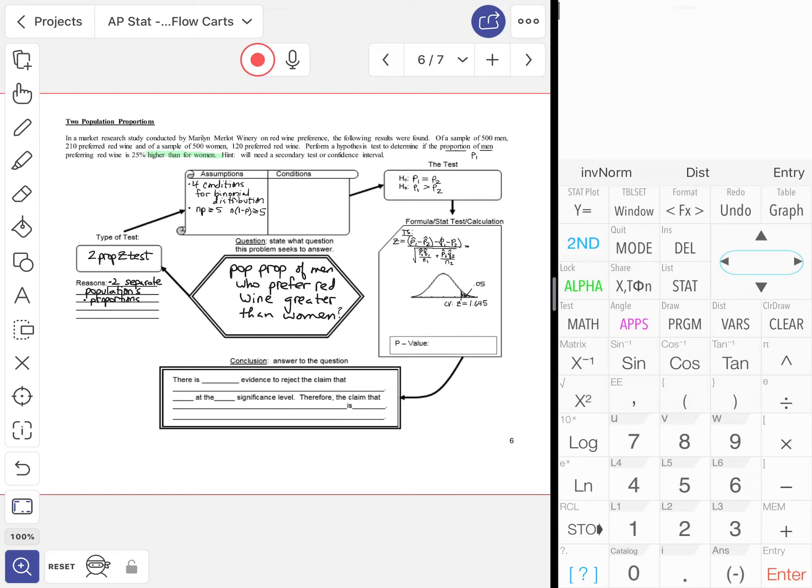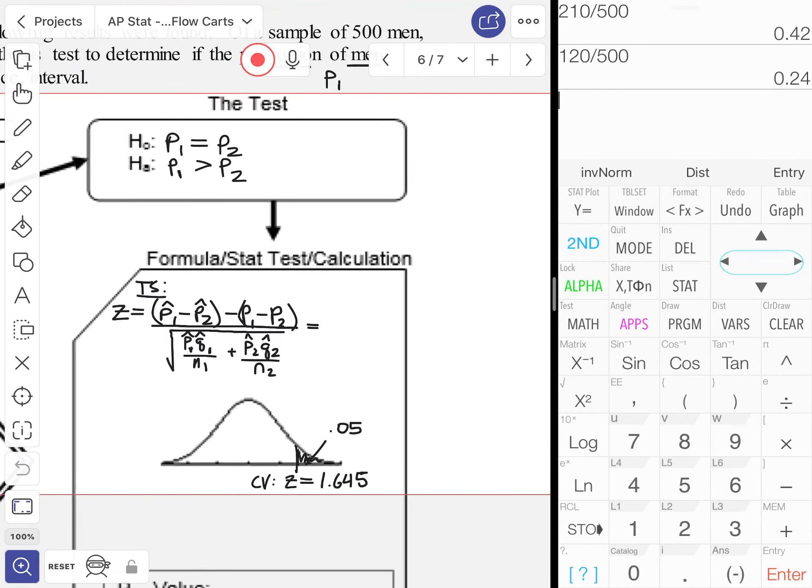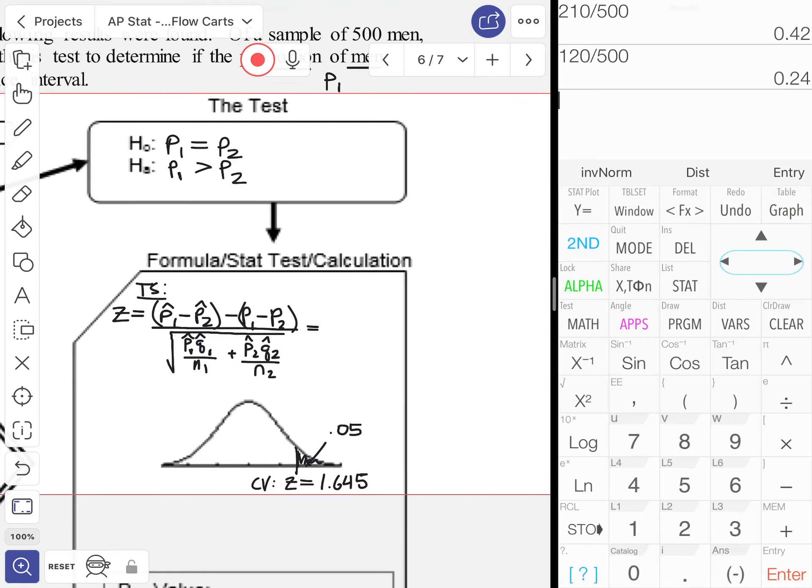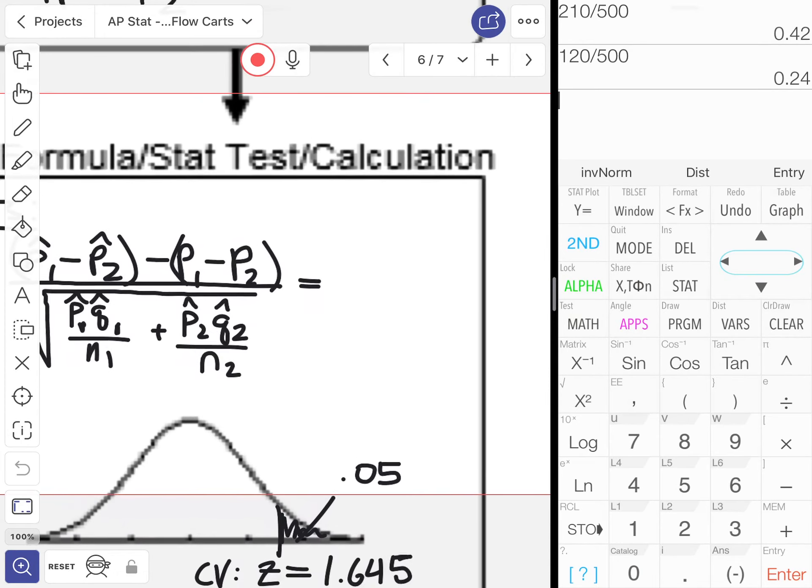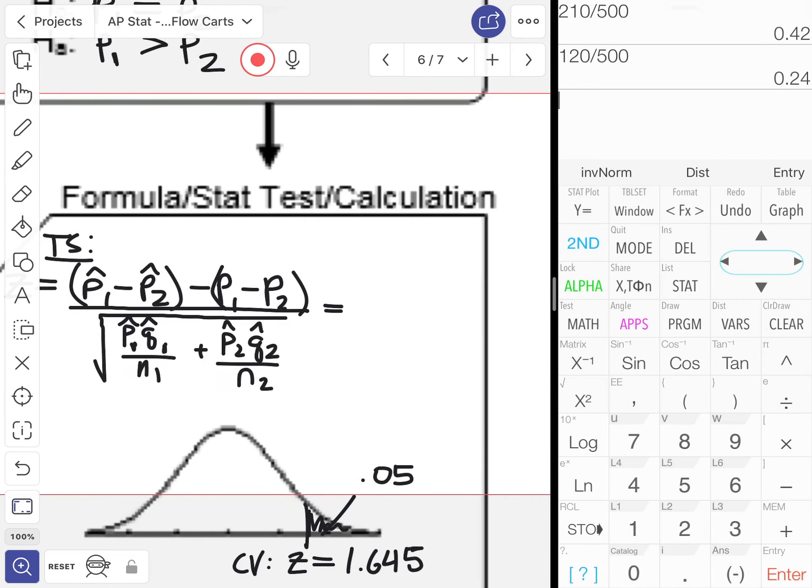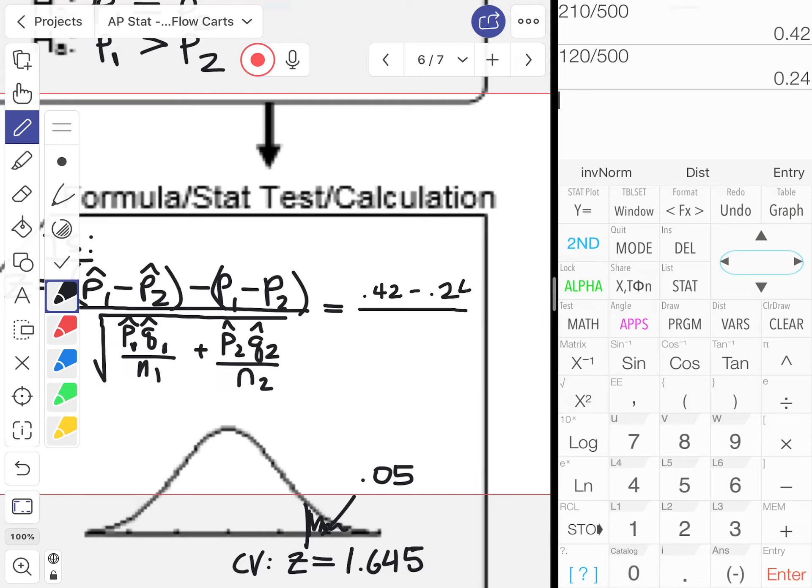In terms of the computation, the calculator is doing it for you, but we're still going to mine the information. From the men, 210 out of 500, that's 0.42. And we had 120 out of 500, should be roughly half of that, 0.24. I'm going to write these values in as shorthand: 0.42 minus 0.24.